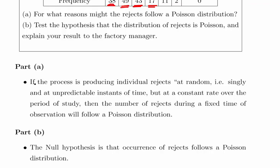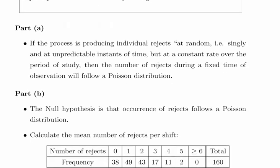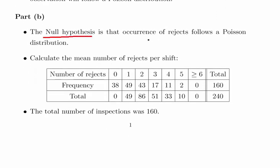What we're going to do here is test the hypothesis that the distribution of rejects is Poisson and explain your results to the factory manager. State the null hypothesis: that the occurrences of rejects follows a Poisson distribution.